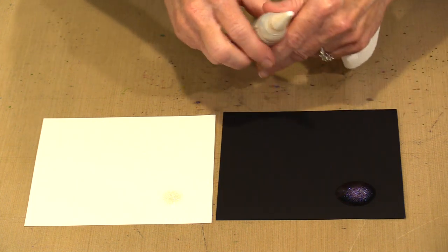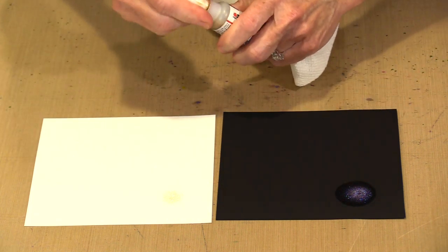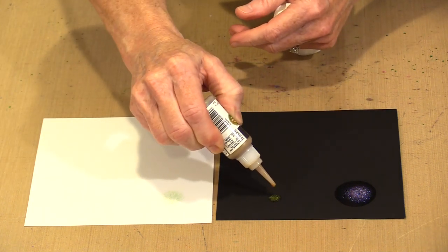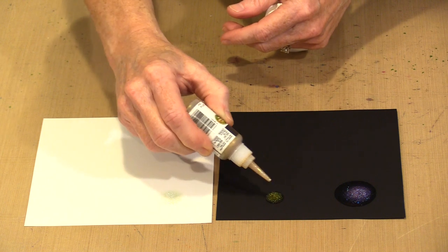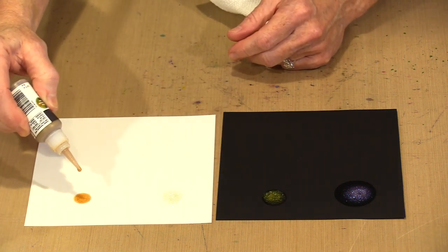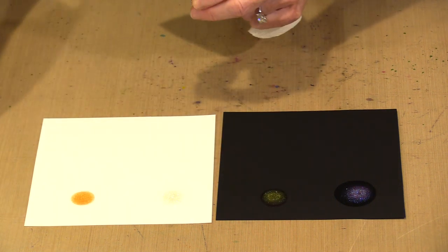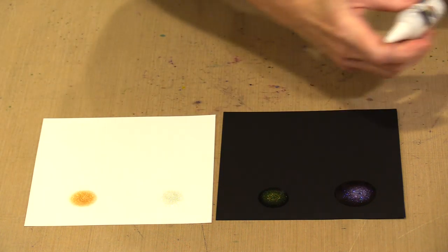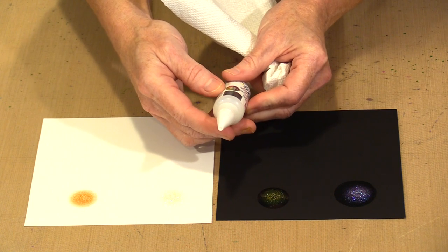This is Glitter Gold Bronze Green. I'll give it just a little bit of a shake and put that here. This one, the color is going to be a little bit more obvious on the white because of the gold that is in there.